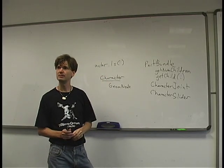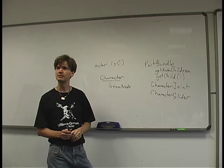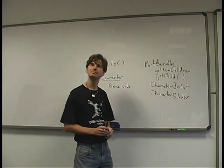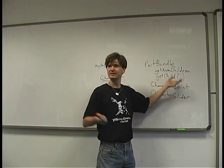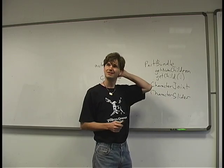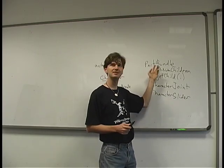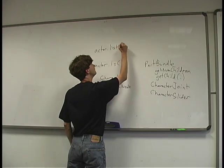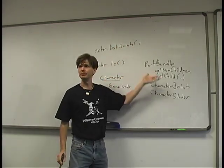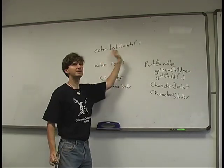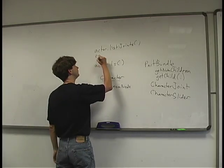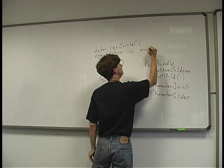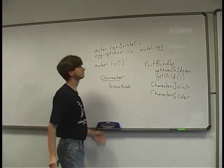If you call getChild(1) on the base PartBundle, you can print it out and it'll list all the joints in the model. There's also actor.listJoints(), which does that recursive walk and prints out everything it finds — handy if you just want to see what's inside your actor. For that matter, if you've got an egg file, egg-ls dash-ls model.egg will also do this.